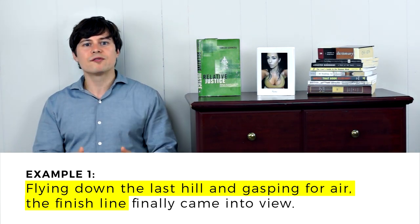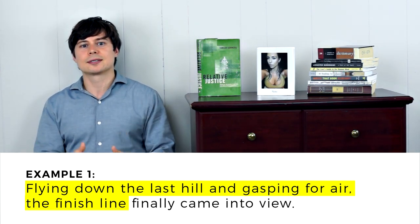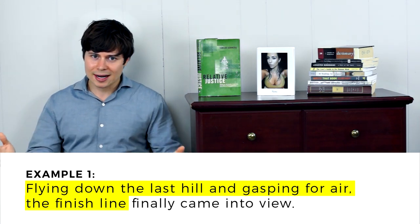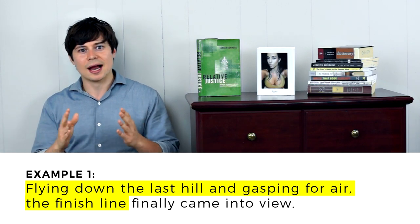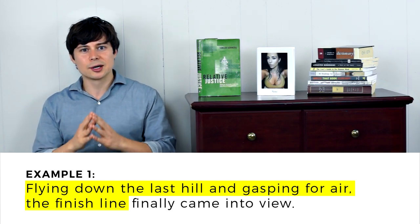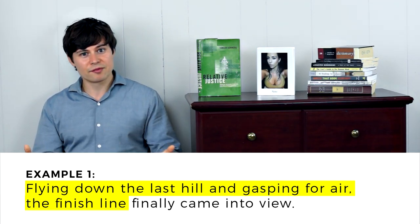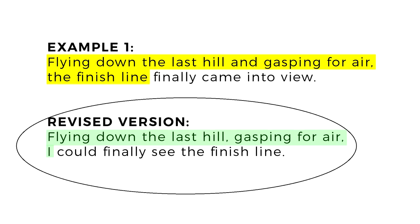How would we ever determine who won a race? The whole point of a finish line is that we know where it is at all times. To be more clear and more concise, we need to make sure that the runner, and not the finish line, is clearly linked to its modifiers. Here's the revised version after we remove the DM: 'Flying down the last hill, gasping for air, I could finally see the finish line.' Perfect.